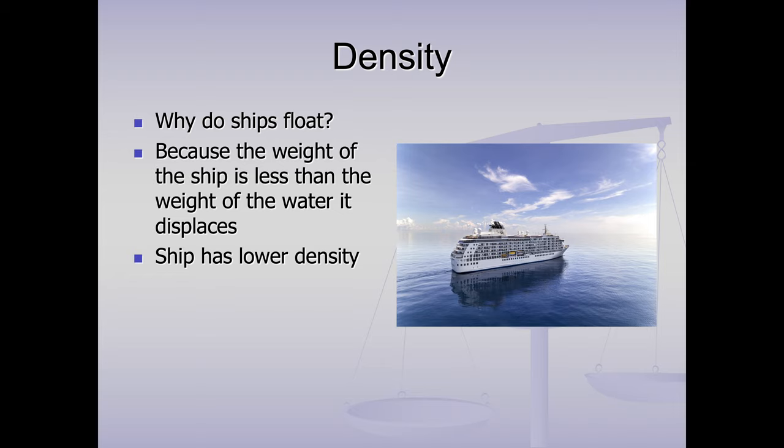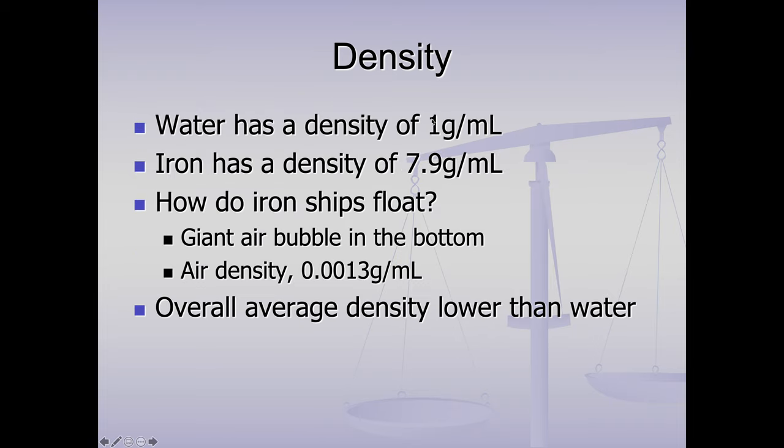And this is why, if you think about why does a ship float? They're made of iron. Iron is very dense. And it's because the weight of the ship is less than the weight of the water that it pushes away. The ship is very, very heavy. They weigh tons. But the ship actually has a lower density. So just to put it in perspective, water has a density of one gram per milliliter. Iron has a density of almost eight grams per milliliter. So if you took a piece of iron and dropped it in water, it would sink like a stone. How do iron ships float? Because they have a big air bubble in them. The bottom has chambers just full of air. Air has a density a thousand times almost less than water. So overall, the density of the ship is actually lower than the water. The material it's made of is much heavier, but it's got a big air bubble in it. So there's your fun fact for the day.